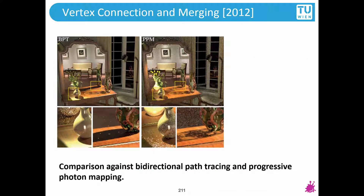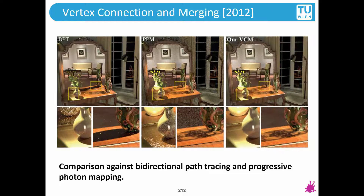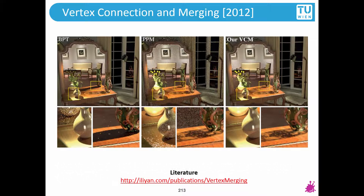Now a comparison: first bidirectional path tracing, then progressive photon mapping, and vertex connection and merging. Make sure to check out the paper.